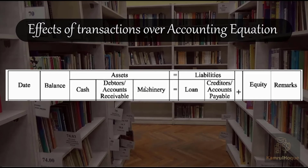On the asset side we have: cash, debtors (accounts receivable), machinery, furniture, and building. On the liability side we have: loan, creditors, and other related items. These components make up the two sides of the accounting equation.